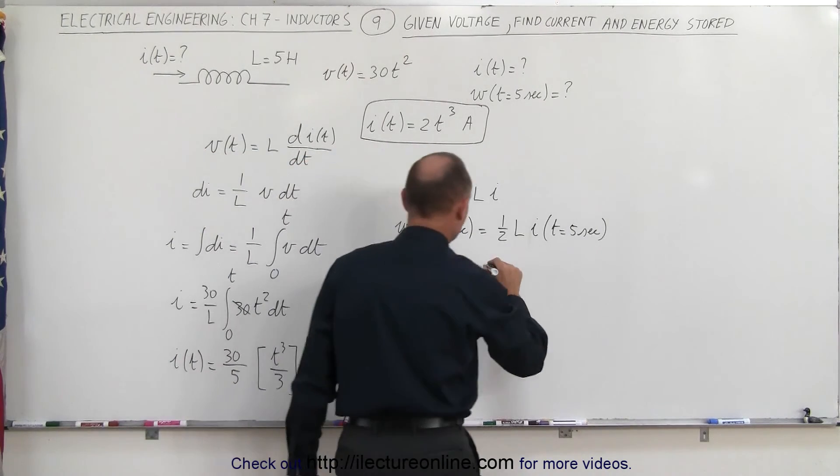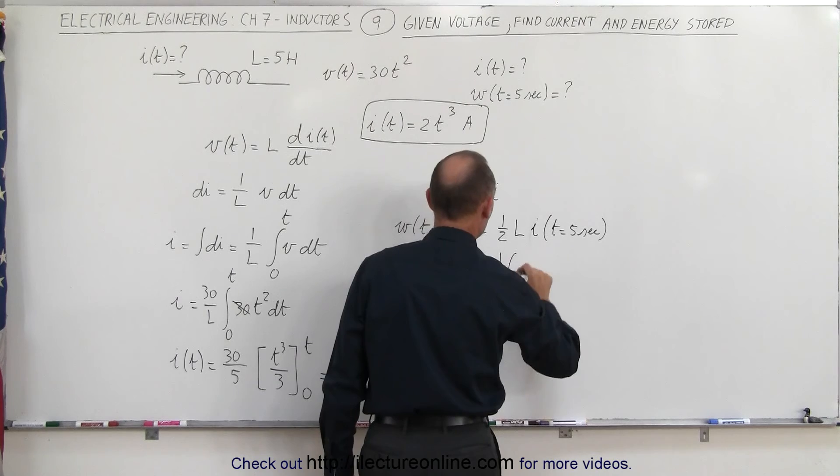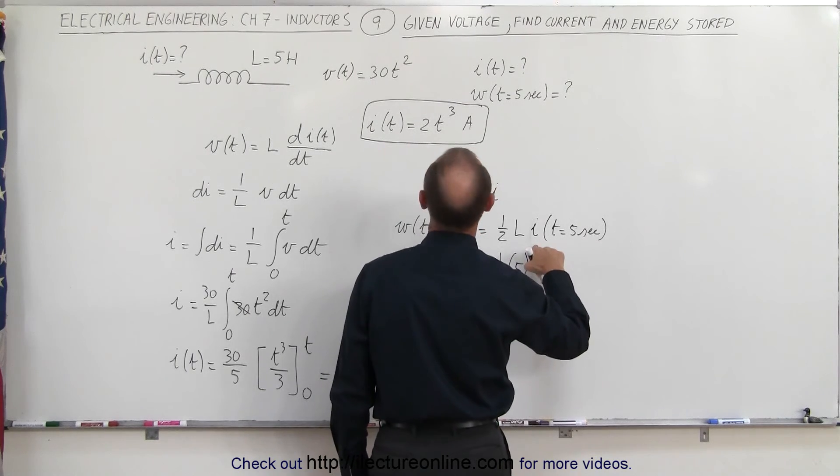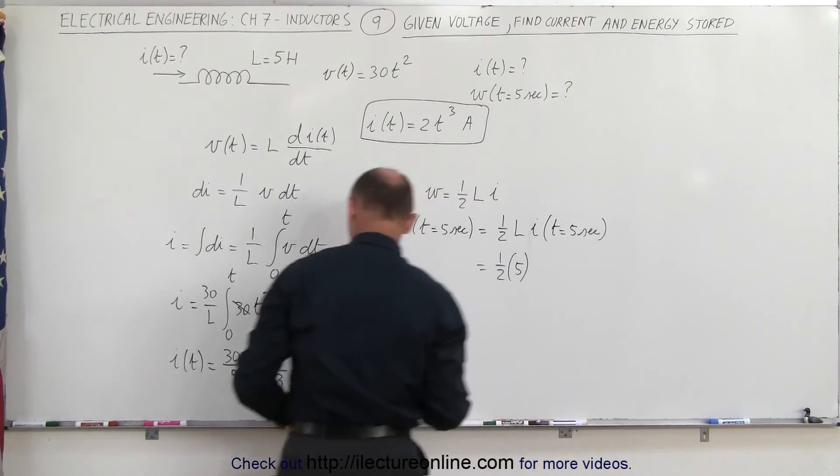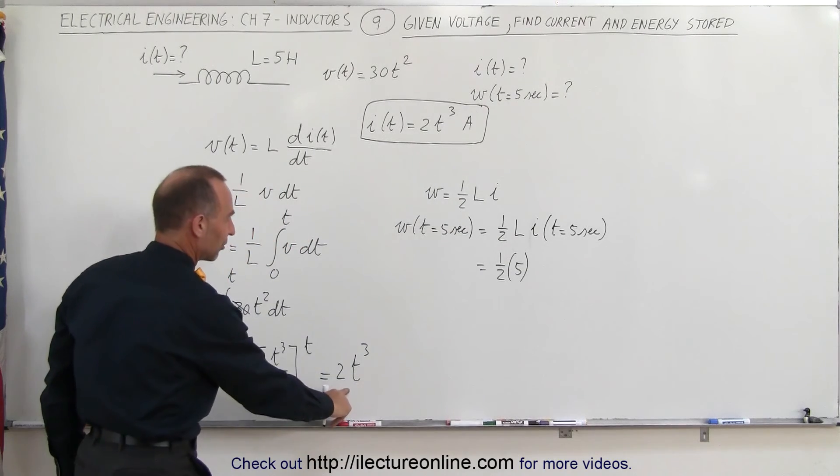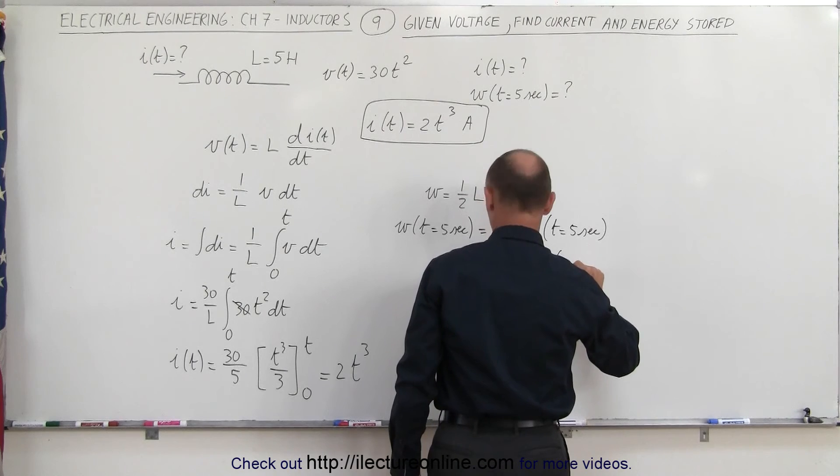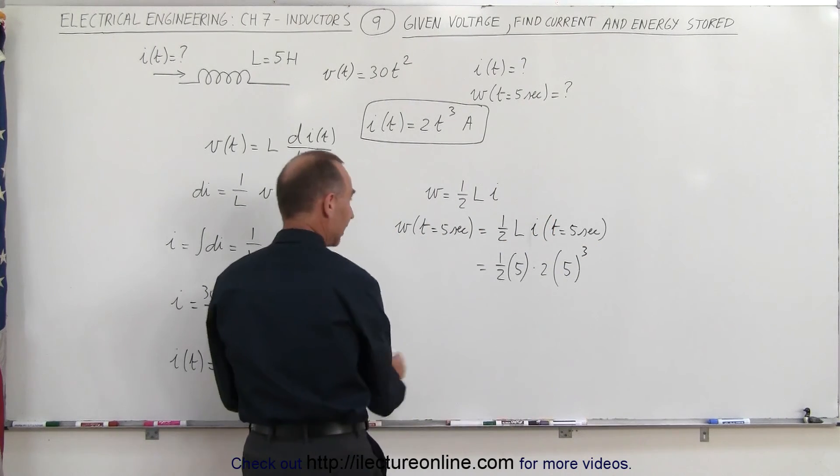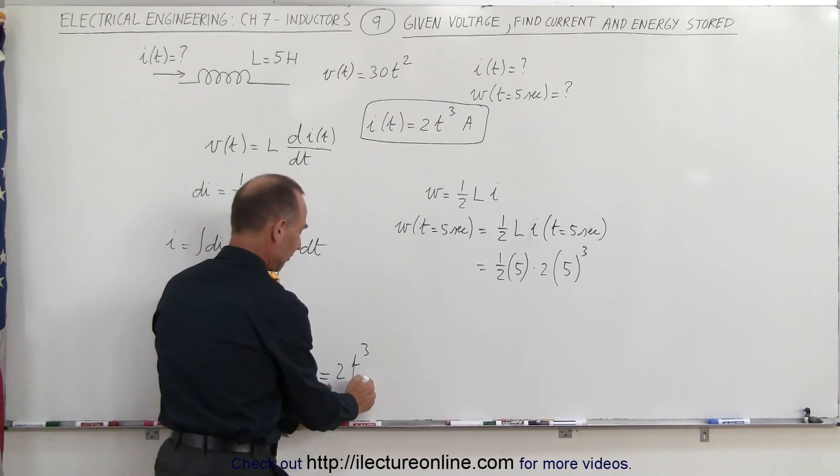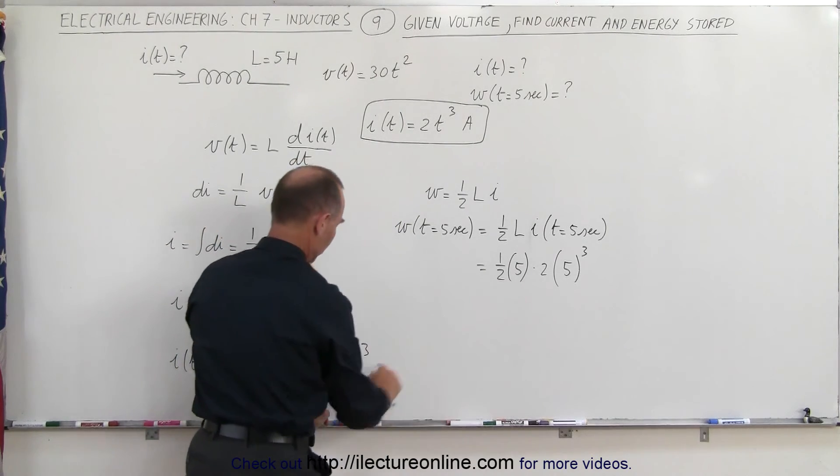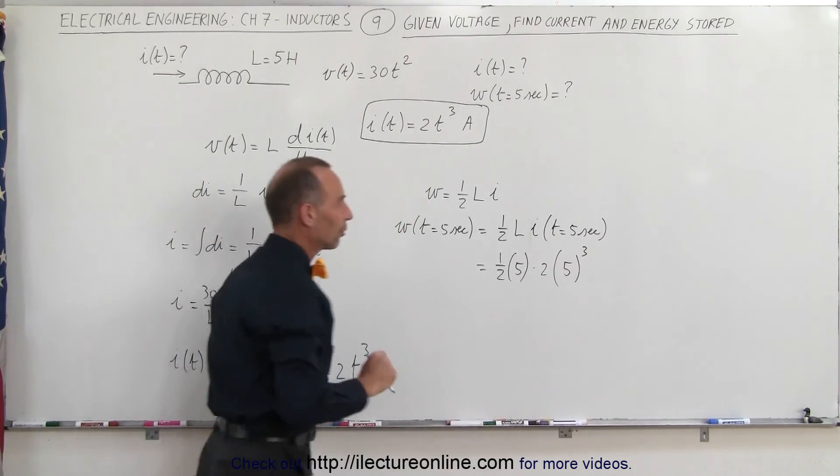Let's go ahead and plug that in. So this is one half times the inductance of five Henry's times the current which is right here, times 2 times T cubed and T would be five seconds cubed. So I've taken I which I got right here from the previous answer, plug in the two, plug in the time raised to the third power.